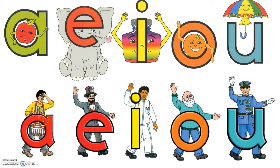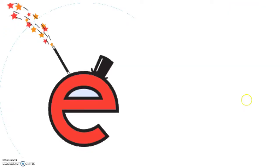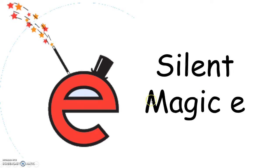Mr. A's sound is 'a,' Mr. E's sound is 'e,' Mr. I's sound is 'i,' Mr. O's sound is 'oh,' and Mr. U's sound is 'u.' So now I'm going to talk about this lovely letter which is called silent magic E.